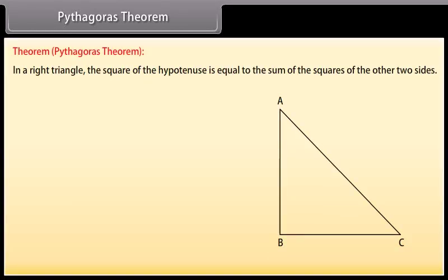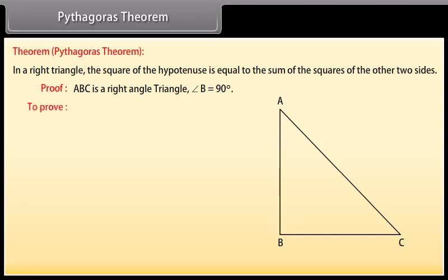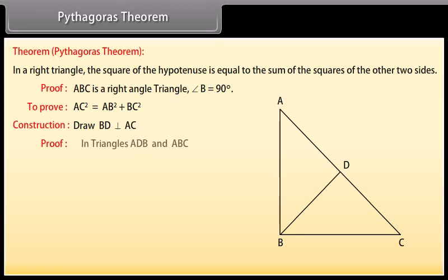In a right triangle, the square of the hypotenuse is equal to the sum of the squares of the other two sides. Let us prove this theorem. Given: ABC is a right angle triangle, angle B equals 90 degrees. To prove: AC² = AB² + BC². Construction: Draw BD perpendicular to AC. In triangles ADB and ABC, angle A equals angle A (common).